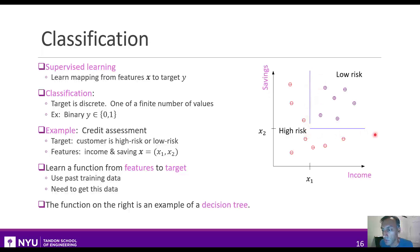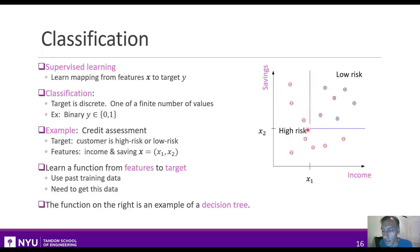Based on this very simple toy data — not real data at all — we could make a prediction rule like this. All the low risk customers are in this top quadrant, and all the high risk customers are below this. This particular type of decision is actually called a decision tree, because you first look at whether the income is above a certain level, and then whether the savings is above a certain level. We'll talk about this in the very last unit of this class.